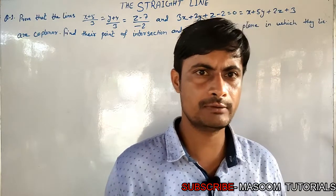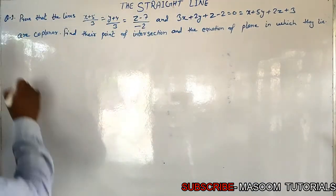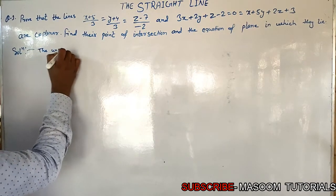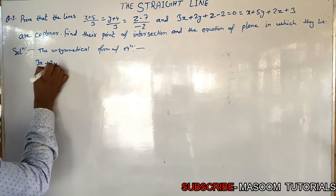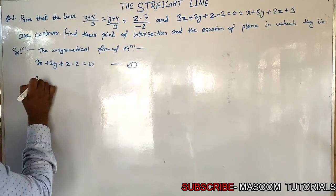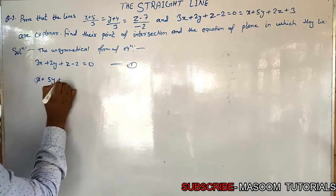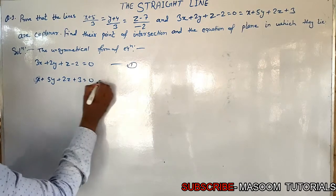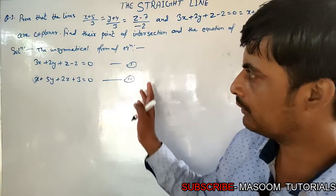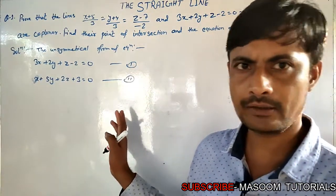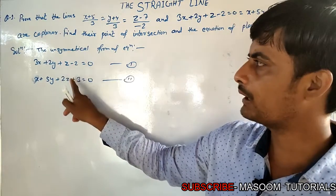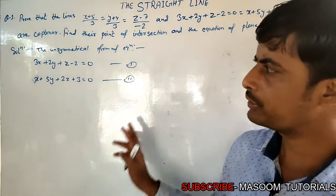This is the unsymmetrical form of the equation: 3x plus 2y plus z minus 2 is equal to 0. The combined form of two planes represents the unsymmetrical form of the equation of a straight line.